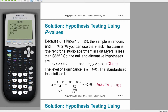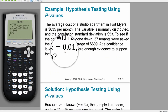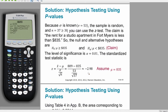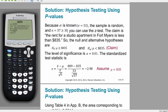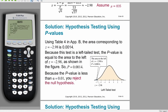We get our z-score as well as our p-value. Since we're working using p-values, we can see that the p-value is just a little bit less than 1%, so it's inside our rejection region. As a result, we can reject the null hypothesis in this case.